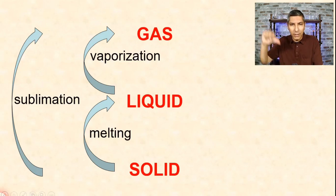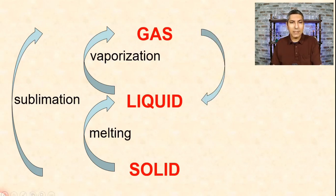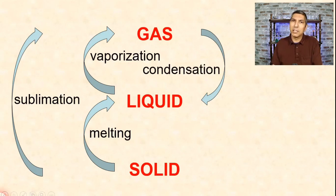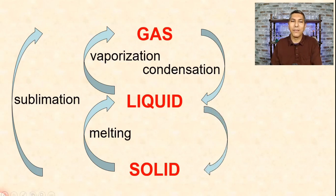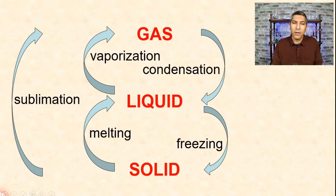How about going in the other direction — losing energy? A gas changing to a liquid is called condensation. You've seen this before — anytime it rains, that's condensation taking place in the atmosphere, where water vapor turns into liquid droplets that fall as rain. A liquid changing to a solid is called freezing. Freezing rain, hail, and sleet are all good examples of freezing.